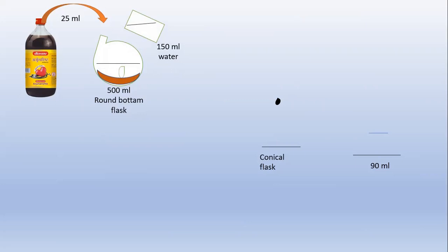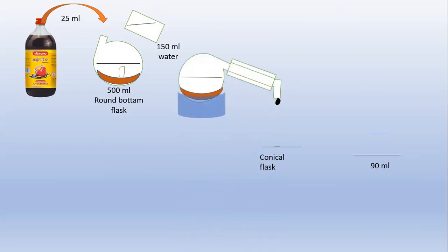To that mixture we are going to add a little quantity of pumice powder. If pumice powder is not available, you can use bumping chips or small porcelain pieces to avoid bumping and to maintain uniformity in temperature.